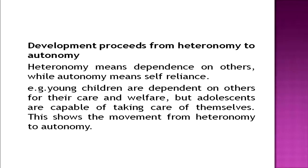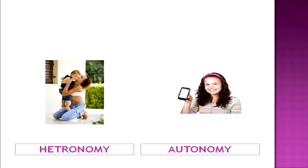Another principle is that development proceeds from heteronomy to autonomy. Heteronomy means dependence on others, while autonomy means being self-reliant. Children are dependent on others for their care and welfare. But adolescents are capable of taking care of themselves — this shows the movement from heteronomy to autonomy. As we can see in this picture, a little child is very dependent on his or her mother, whereas as the child grows into an adolescent, he or she becomes independent enough to fulfill their own needs.